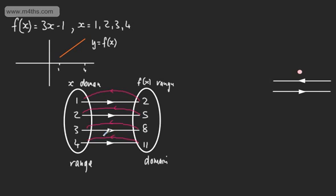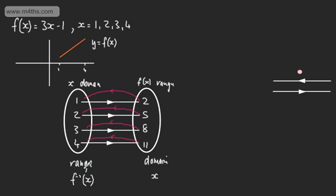When we're looking to find an inverse function, the original function must be a one-to-one. Quite clearly, this linear function is a one-to-one — we can see it by its graph. If not, we need to restrict the domain such that we can find an inverse. In general, the notation we use for the inverse is f to the negative 1 of x, and we map values in the domain to the inverse function.